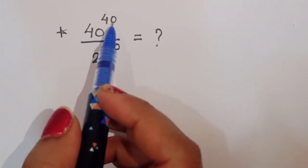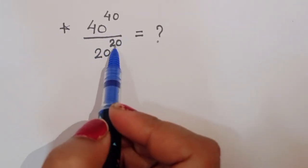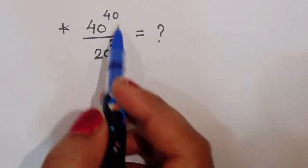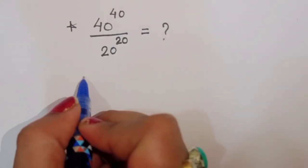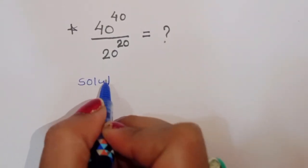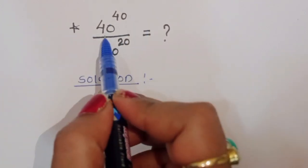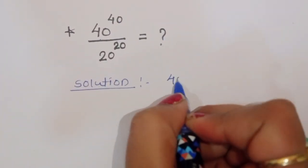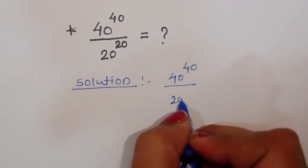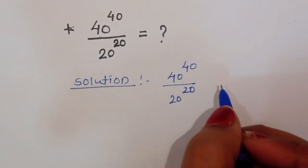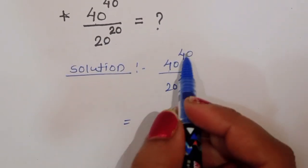The question is: 40 power 40 divided by 20 power 20. We have to find out the solution of this problem. Let's say, what is given — 40 power 40 divided by 20 power 20.